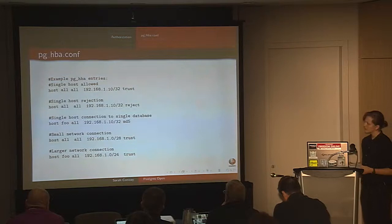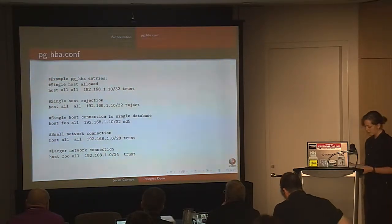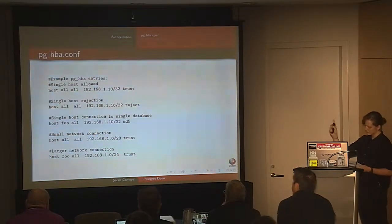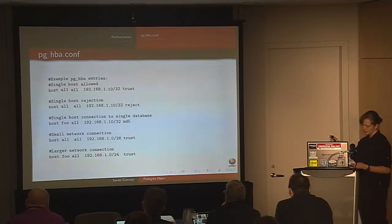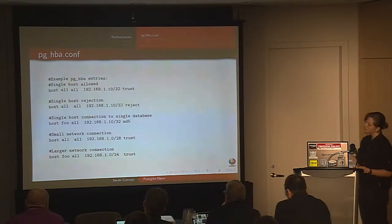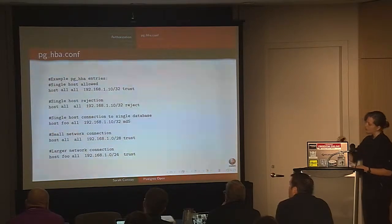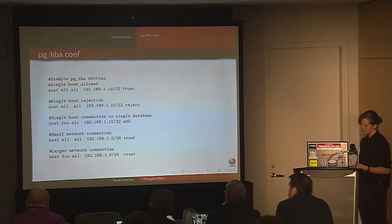Here are some common examples of what you might do with pg_hba.conf: allowing a single TCP/IP connection, rejecting a single TCP/IP connection, connecting a single host to the database 'foo', allowing all users on a small subnet to connect, or allowing all users in a larger network to connect to database 'foo'.